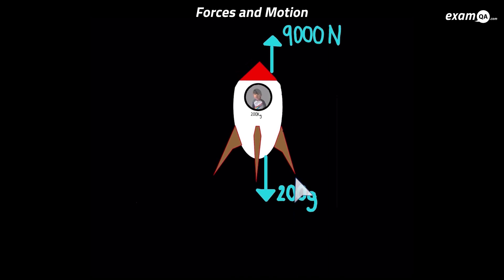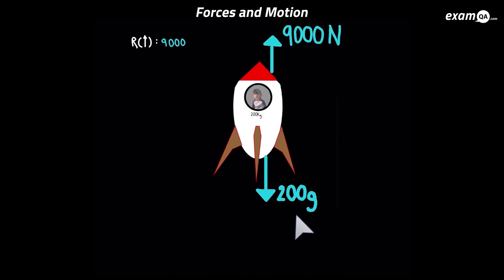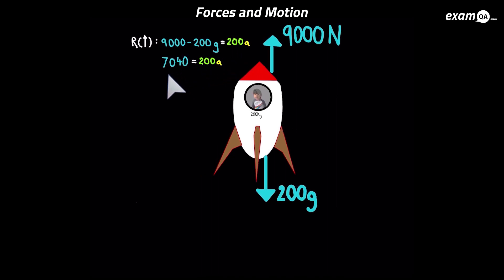Resolving vertically with upwards as positive: 9000 minus 200g equals 200a. Substituting g as 9.8 into the left-hand side gives 7040. Dividing both sides by 200 gives the acceleration: 35.2 metres per second squared.